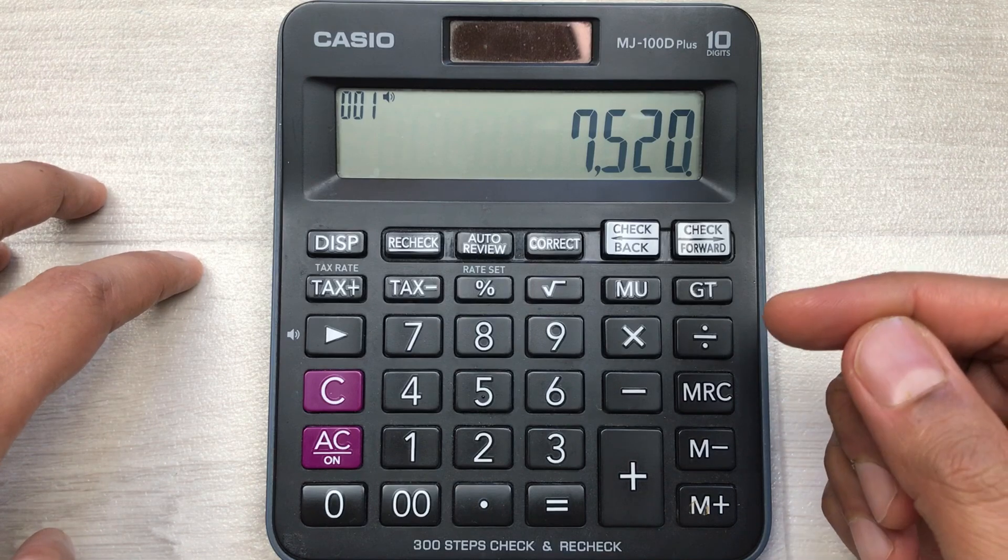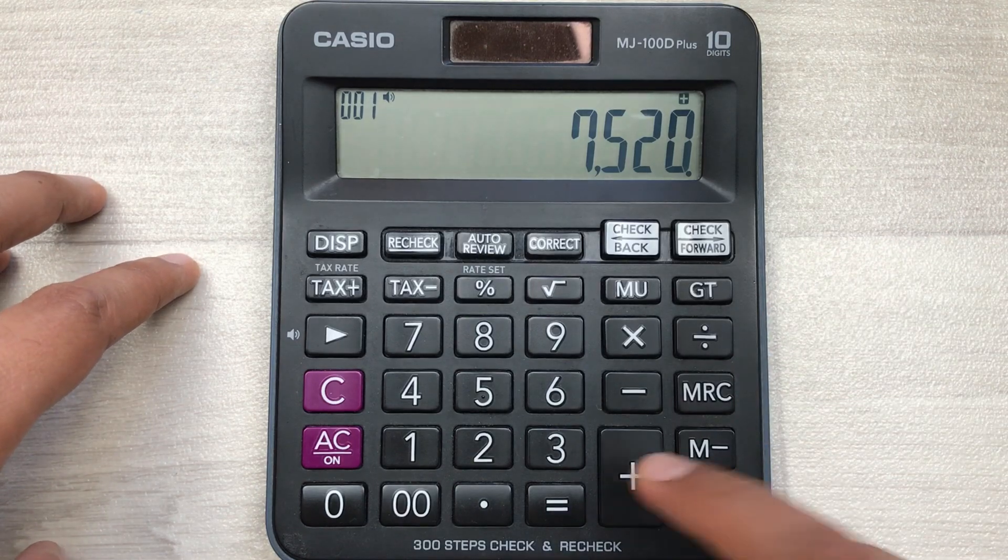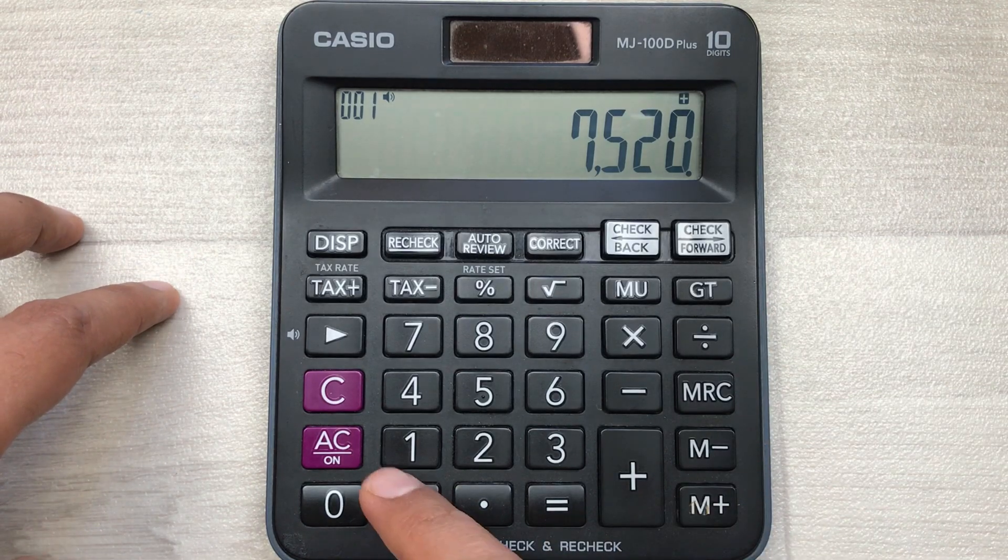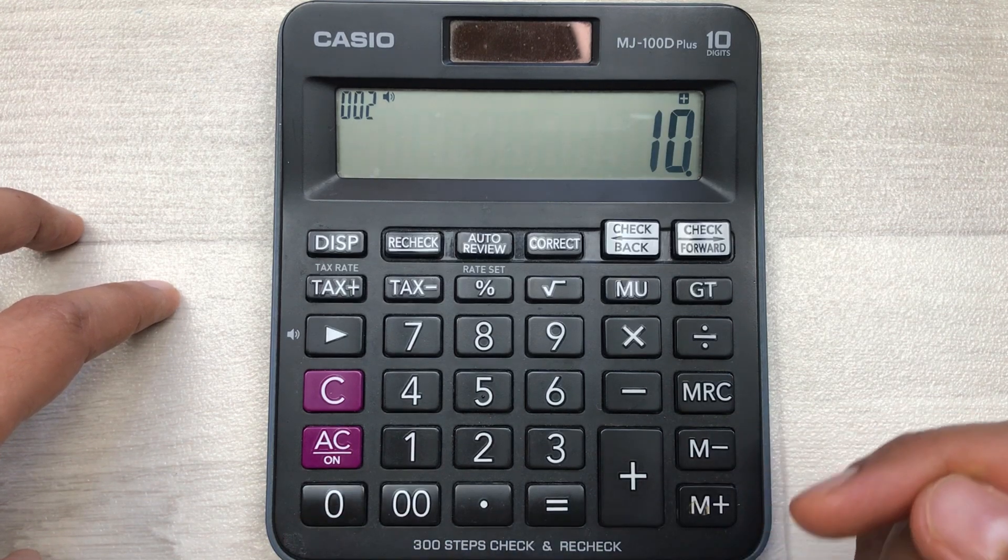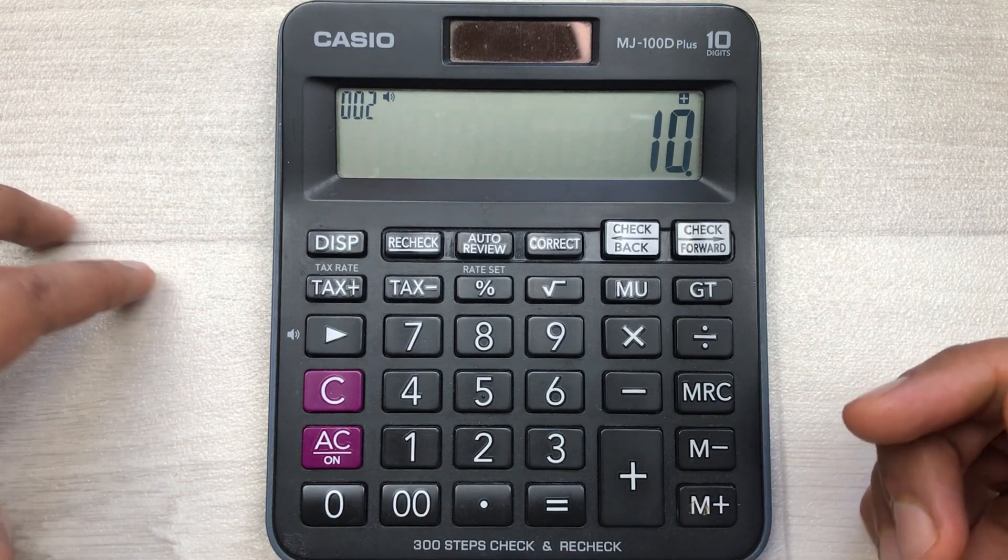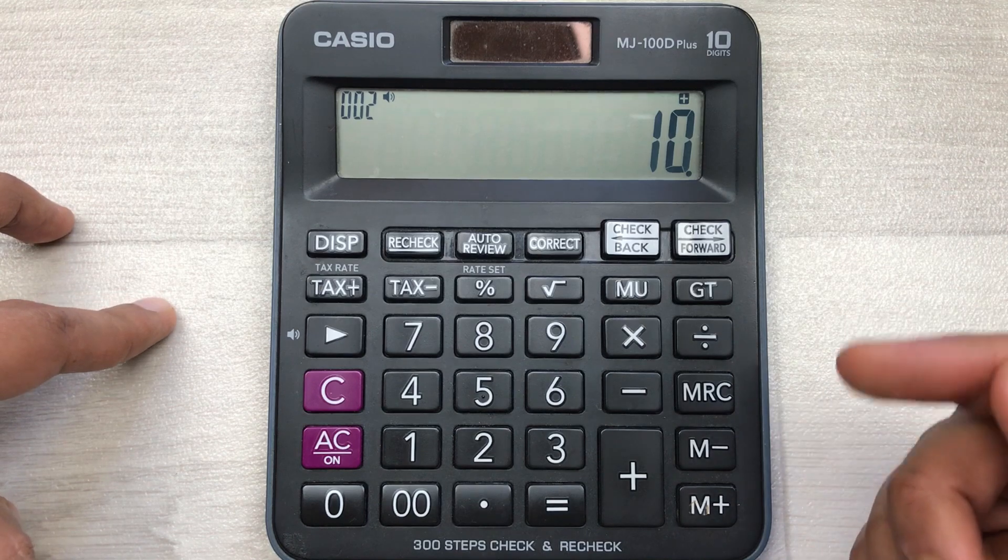What you have to do: you have to press this plus button, and then you have to type 10 because we want to increase the price by 10 percent.